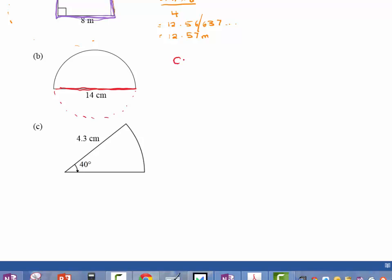So I'm going to use a formula, circumference equals π times diameter. And how much of a circle do I have? Well I have half a circle, so I'm going to divide by 2. So I'm going to do π times 14 divided by 2.